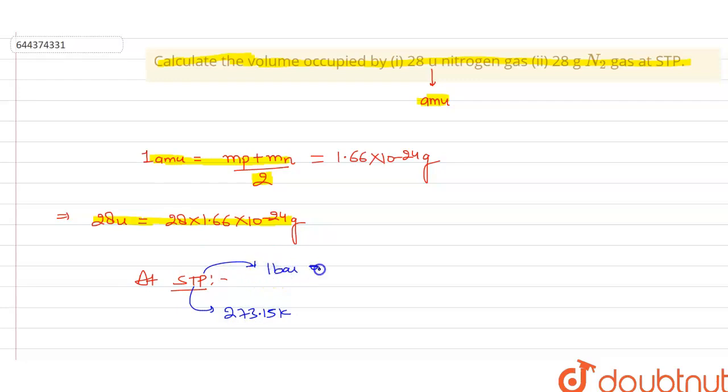An important point to be remembered is that at STP, the volume occupied by one mole of a gas is called molar volume, and one molar volume is equal to 22.4 liter at the standard temperature and pressure.